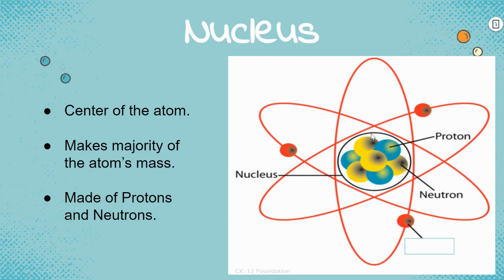And here in the very center, you see it makes the majority of the atom's mass. So what this means is that the protons and the neutrons are a lot bigger than the electrons out here on the outside.